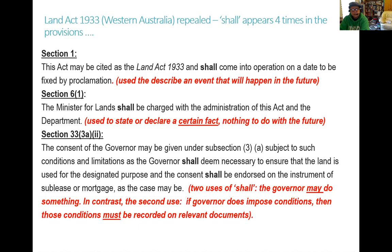Section one reads: 'This Act may be cited as the Land Act 1933 and shall come into operation on a date to be fixed by proclamation.' This kind of writing is quite common in statutes — it tells you when the legislation will take effect, with a date to be fixed by proclamation. Here the word 'shall' is actually used to describe an event that will happen in the future. 'Shall' is kind of prospective — looking forward into the future at another point in time.